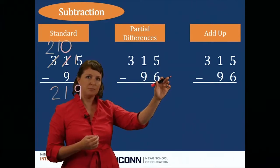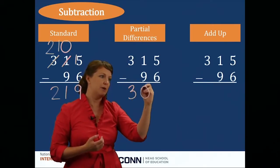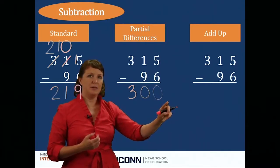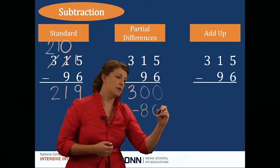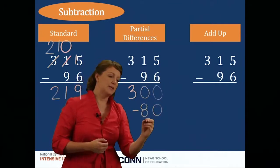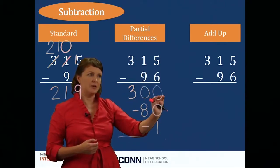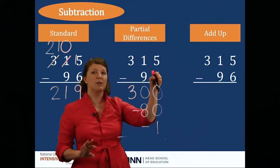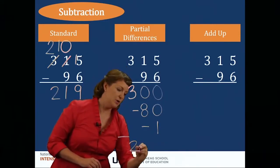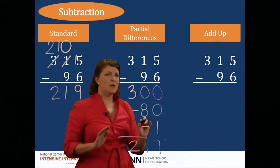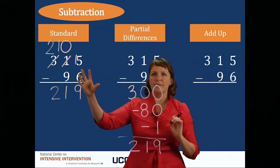For teachers working with middle school or high school grades, partial differences might be a useful strategy. Doing 315 minus 96, working left to right: 300 minus no hundreds is 300. Then 1 ten minus 9 tens is negative 8 tens, or negative 80. Then 5 ones minus 6 ones is negative 1. These are my partial differences. So 300 minus 80 is 220, minus 1 is 219.